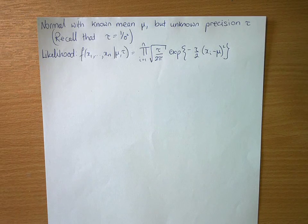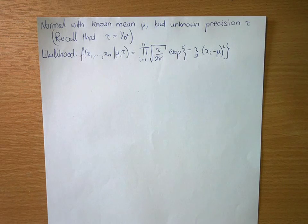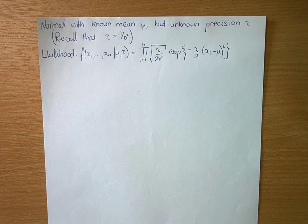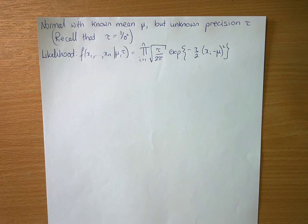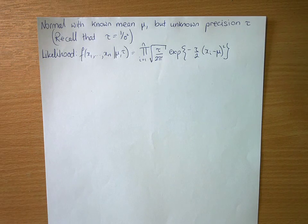Okay, so today we're going to look at a case for a normal distribution with a known mean mu, but an unknown precision tau. I'm just going to remind you that tau is defined as being 1 over the variance. So our precision is 1 over the variance.